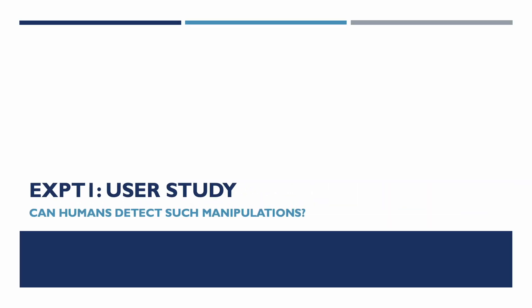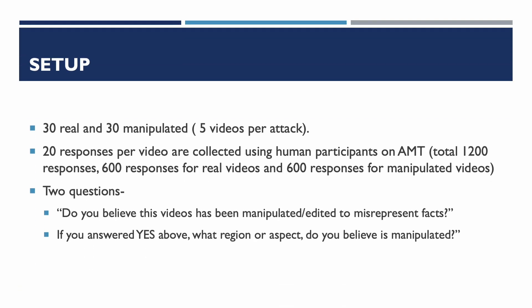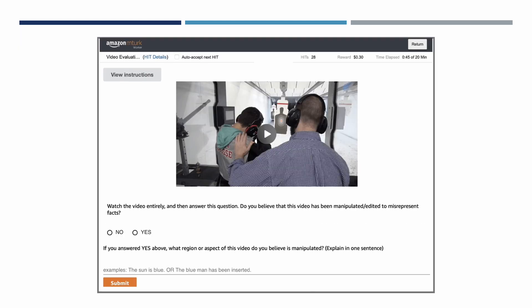In the first experiment, we run a user study on Amazon Mechanical Turk to understand if humans are deceived by such attacks. We randomly selected 30 real and 30 manipulated videos from our dataset and collected 20 responses per video. This is a snapshot of the Amazon Mechanical Turk study interface.